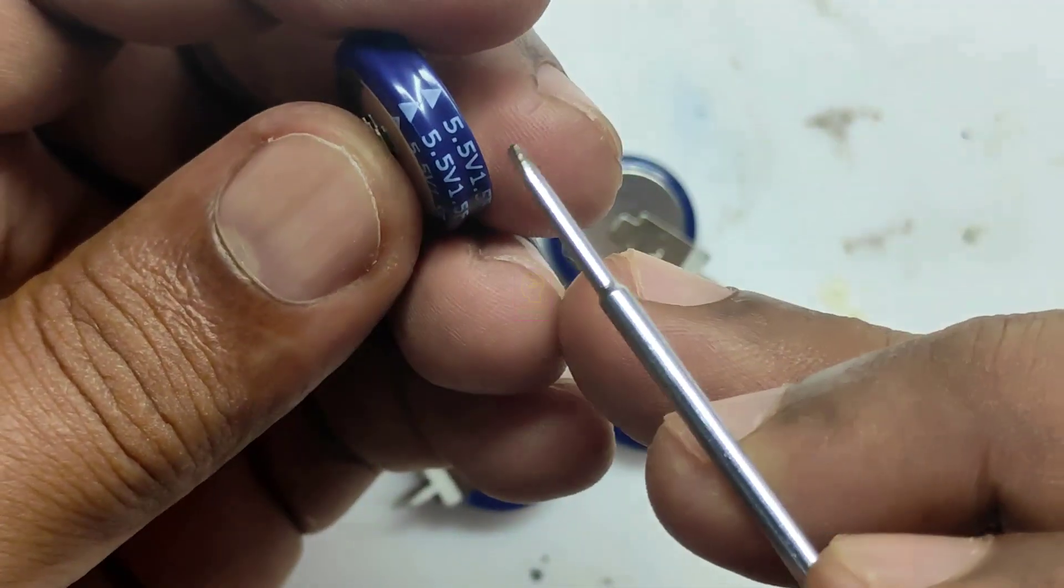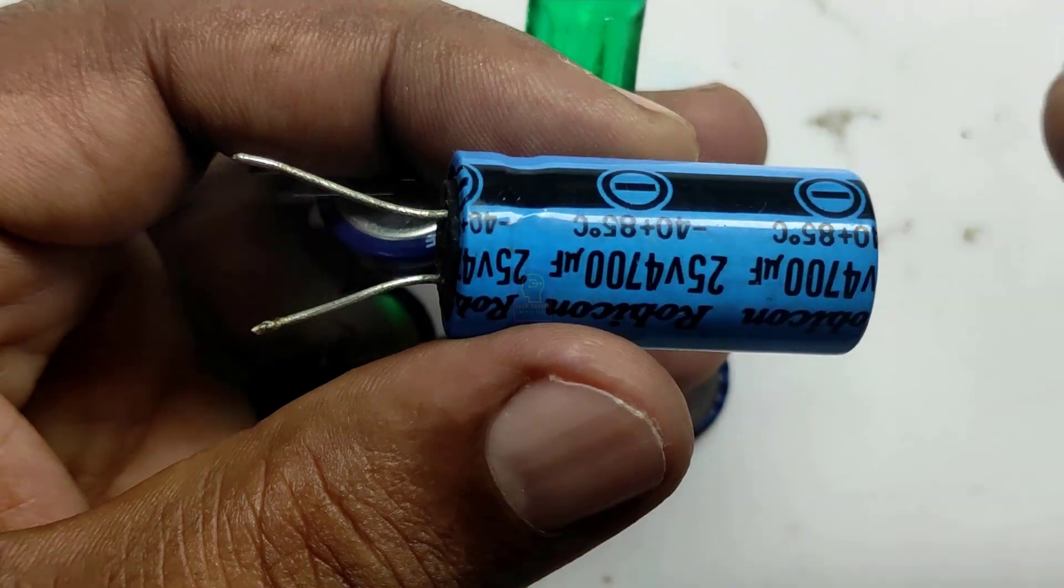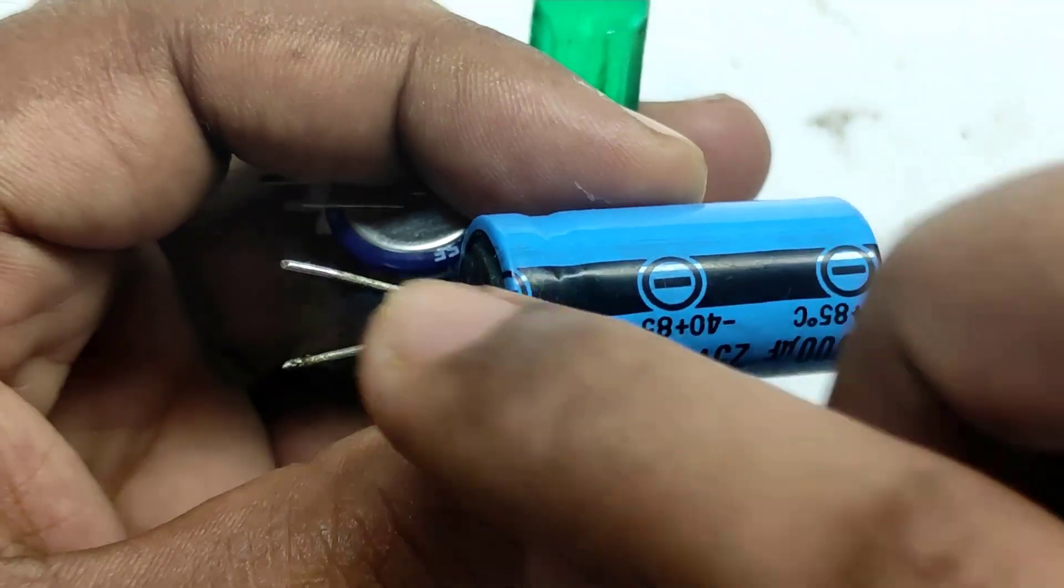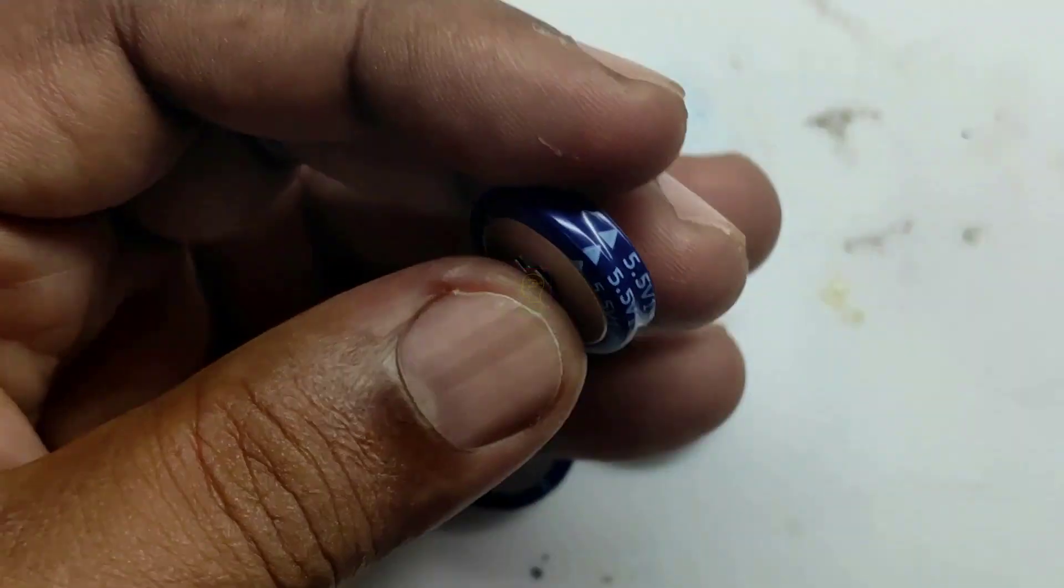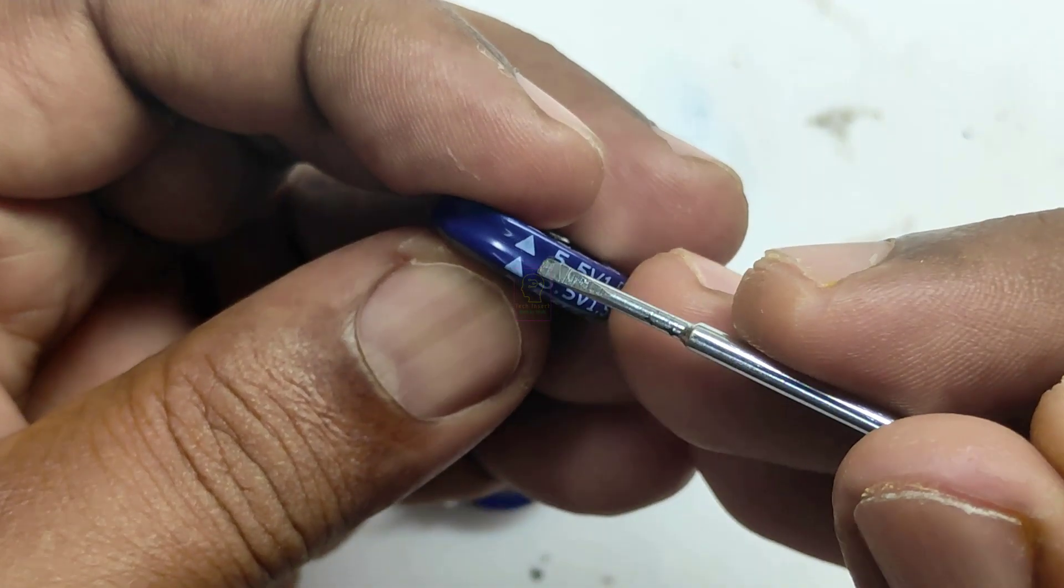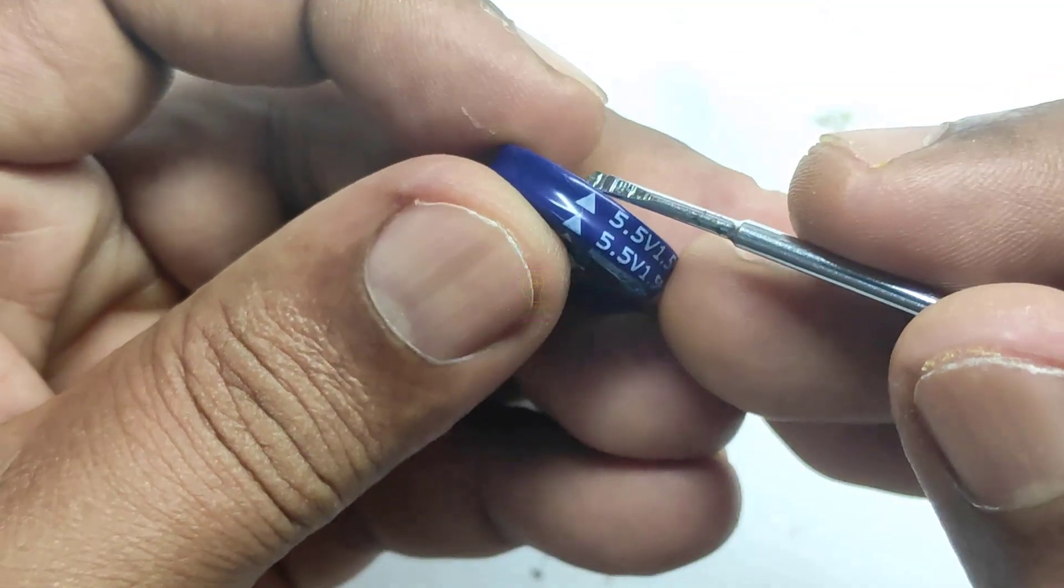In normal capacitors, you can see a negative line printed at the wrapper of this capacitor. That lead is actually the negative line. Similar to that, here also you can see an arrow showing the negative line. This arrow is pointing to the top region, that means this end is negative and the other end is positive.